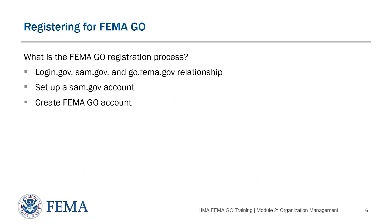The first step for an organization-authorized representative is to register for a FEMA Go account. Within FEMA's new grants management system, there is a new registration process. For those users who already have a SAM.gov account, the process is streamlined — your SAM.gov account information will transfer when you set up an account in FEMA Go. For communities that have not applied for federal assistance before, it is a three-step process: create a login.gov account, then a SAM.gov account, then request access to FEMA Go. Communities without a SAM.gov account can also be registered by their applicant organizations by adding the sub-organization manually.